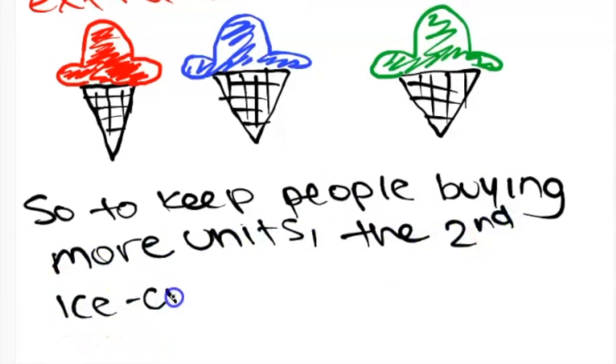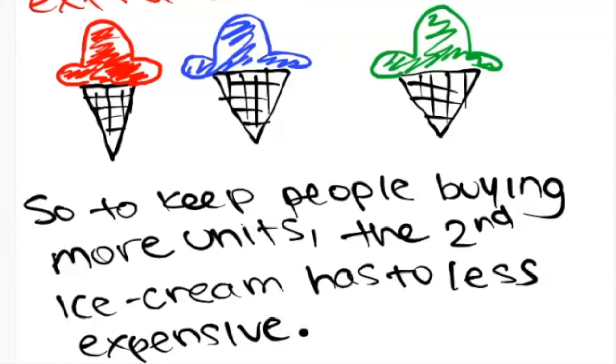That results in the idea that a consumer will only be induced to buy an extra unit of a good if its price falls. I will only be willing to buy that fifth ice cream if that fifth ice cream is much less expensive than that first ice cream. And that is another reason that we see a downward sloping demand curve.